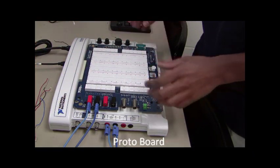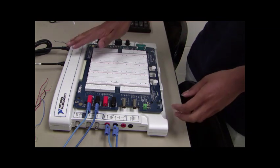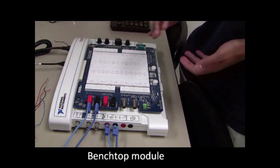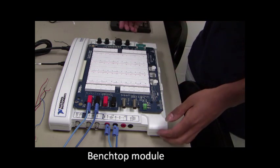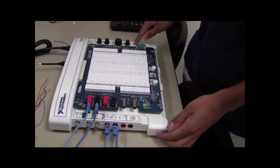This blue color board that you see is called the prototyping board and this white color module, which is called the benchtop module, has utilities such as a function generator here.